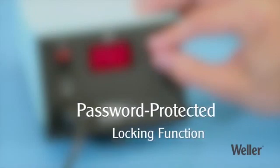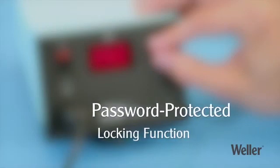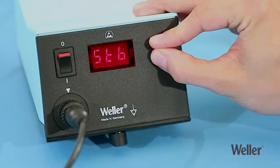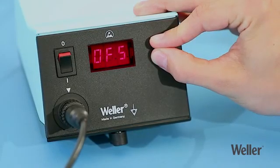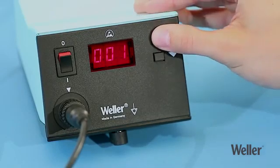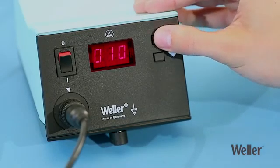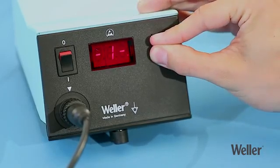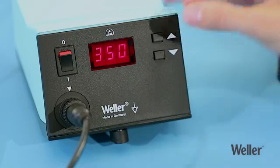The password-protected locking function prevents you from changing any settings after this time. You can lock and unlock the station using your own personal code, which you can choose yourself. You can confirm this code by pressing and holding the up and down buttons at the same time for three seconds.